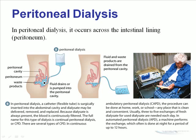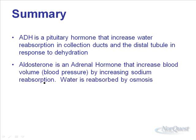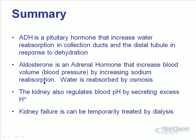In summary: ADH is the pituitary hormone that increases water reabsorption in the collecting ducts and distal tubule in response to dehydration. Aldosterone is an adrenal hormone that increases blood volume and blood pressure by increasing sodium reabsorption, with water following by osmosis. The kidney also regulates blood pH by secreting excess hydrogen ions. Kidney failure can be temporarily treated by dialysis, but it is not a permanent solution — a kidney transplant is the only true replacement. That concludes the excretory system; next lecture begins the muscular system.